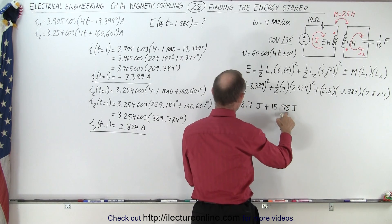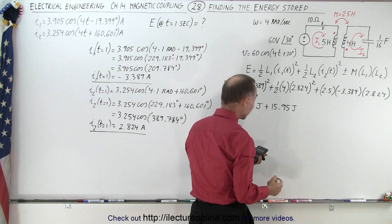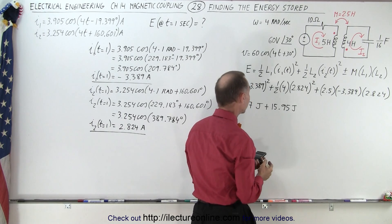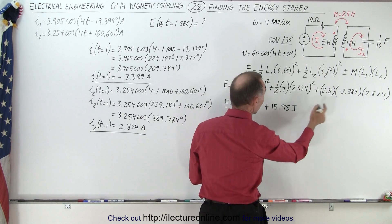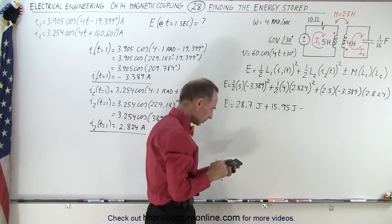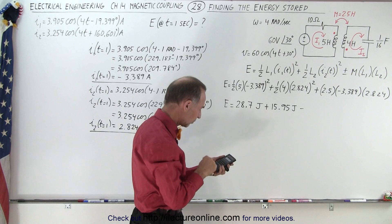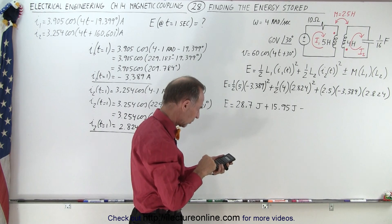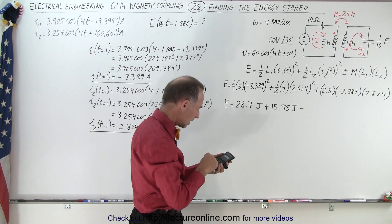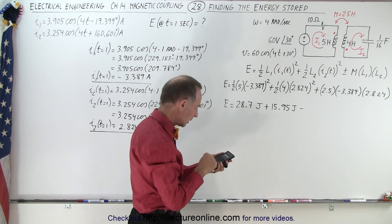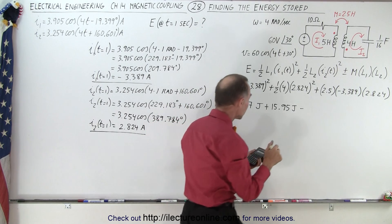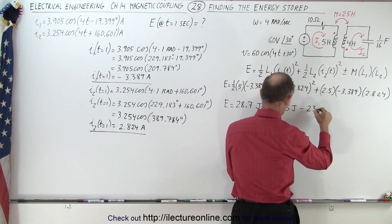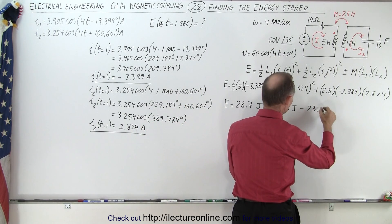I added an extra decimal place because it ended up kind of being halfway between 15.9 and 16.0. Then at the end here, that would be minus the quantity 2.5 times 3.389 times 2.824, which gives me minus 23.93 joules.